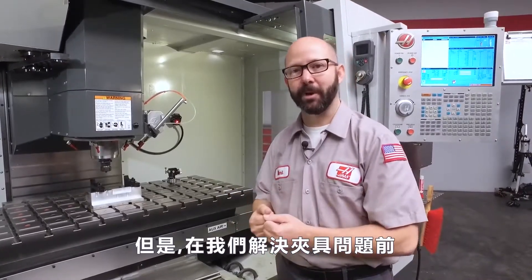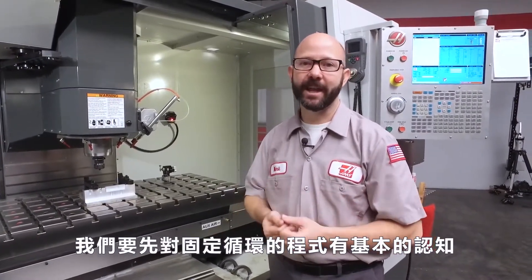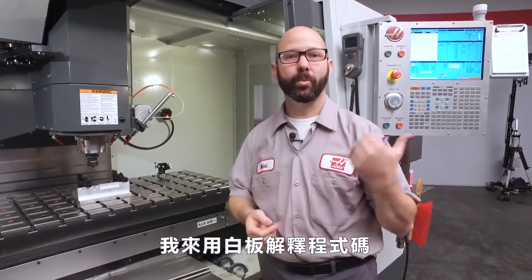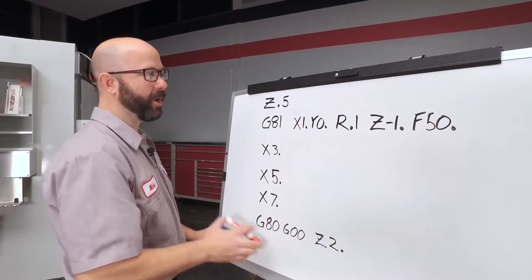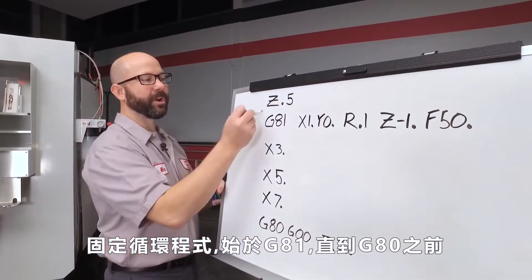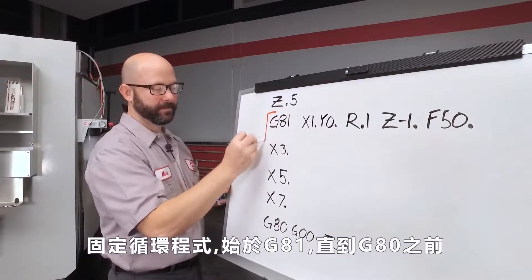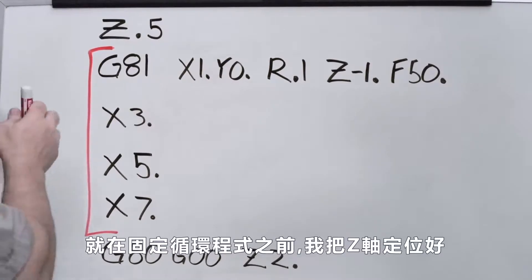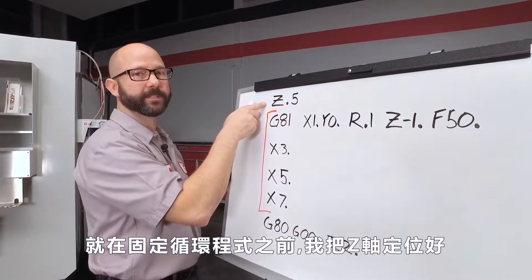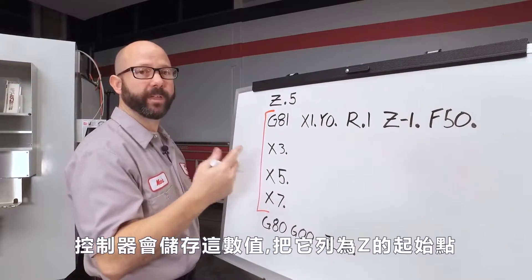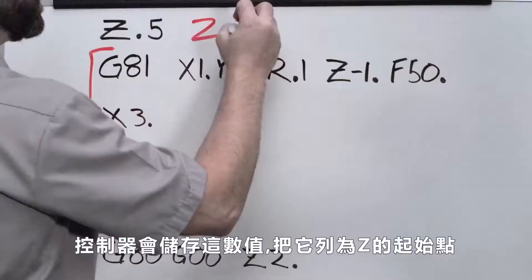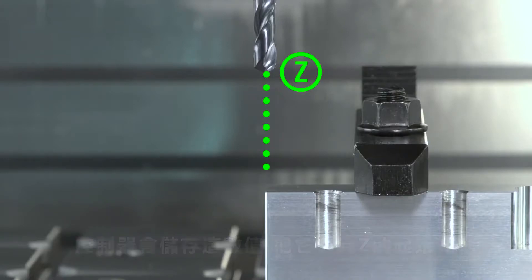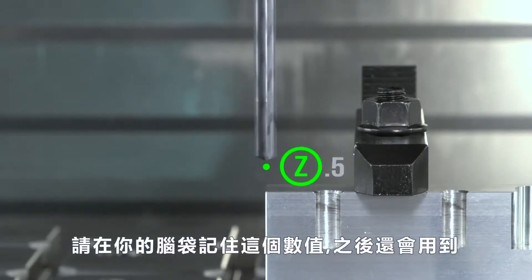Before we can fix our clamp problem, we need a basic understanding of our CAN cycles. To do this, we're going to unpack the code at the whiteboard. Here's our program. Our CAN cycle starts with our G81 line and goes all the way until we cancel it with the G80. Just prior to our CAN cycle, we positioned our Z axis. The control is going to store that value as our Z starting position. Just lock that value in your memory for a minute — we'll come right back to it.